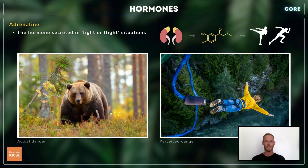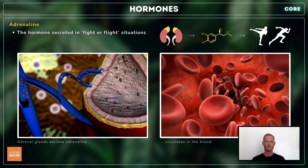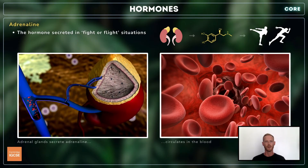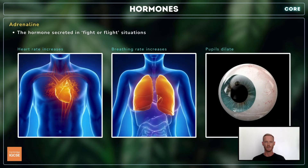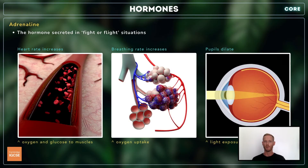Adrenaline is the hormone secreted in fight-or-flight situations. When faced with a potential threat or perceived danger, the body prepares itself to either fight in self-defense or run away. Nervous impulses are sent from the brain to the adrenal glands, which release adrenaline directly into the bloodstream. The target organs of adrenaline include the heart, which beats more quickly, the breathing muscles, which contract more rapidly and forcefully, and the muscles of the iris, which dilate to increase the diameter of the pupil. This speeds up the rate at which oxygen enters the bloodstream and reaches the muscles, and increases the amount of light entering the eye. Collectively, these responses prepare the organism to either overcome or evade the threat.